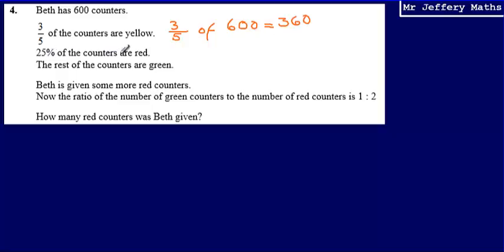We're then told that 25% of the counters are red. Now we're going to work out 25% of 600. A couple of different ways that you can do this. You can either say that 25% is one quarter, so work out a quarter of 600 by taking 600 and dividing it by 4. Or you can work out 10% as 60, 20% as 120, and 5% as 30, and add all those together. Either way, we're going to get 150 as our answer. So we've got 360 yellow, 150 that are red.